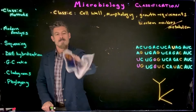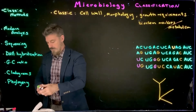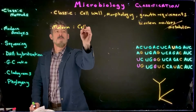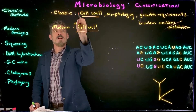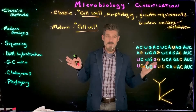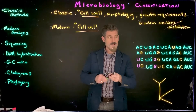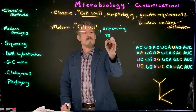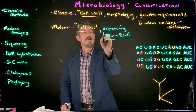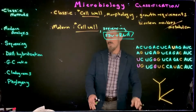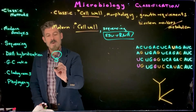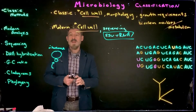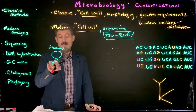In a more modern analysis, cell wall is still going to be the primary grouping for bacteria. After that, what we're going to start to do is DNA sequencing — specifically sequencing of the small subunit ribosomal RNA. Remember, you've got a large subunit and a small subunit for a ribosome, and we're looking at the DNA sequence that codes for that small subunit.